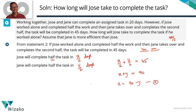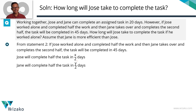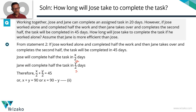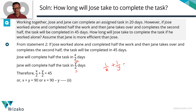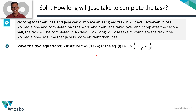To recap: Joe completes half the task in X/2 days, Jane completes half the task in Y/2 days, and together working serially they finish in 45 days, giving us X + Y = 90, so X = 90 − Y. We have Equation 1: 1/X + 1/Y = 1/20, and Equation 2: X = 90 − Y. Let's substitute X = 90 − Y into Equation 1.